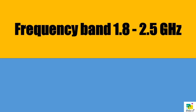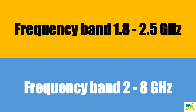In 3G technology, the frequency band is 1.8 to 2.5 GHz. But in 4G technology, the frequency band is from 2 to 8 GHz.